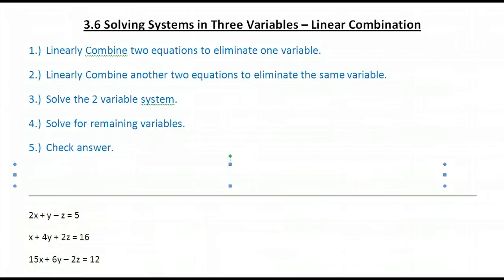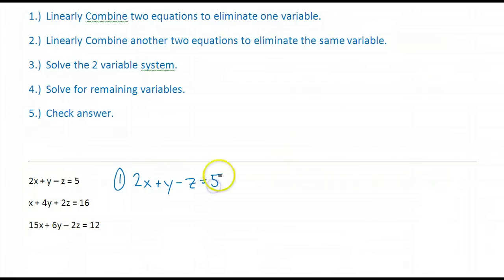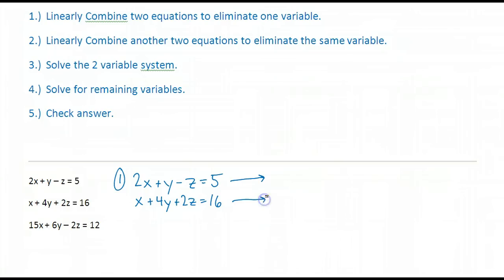Let's do an example using these five steps. Step 1: linearly combine two equations. It doesn't matter which equations I pick — I'm going to pick the first two equations. I'm going to linearly combine them to eliminate a variable. Again, it doesn't matter which variable I eliminate. I could pick x, y, or z. I'm going to pick x.